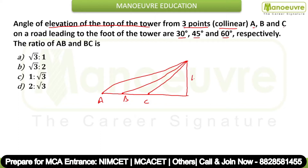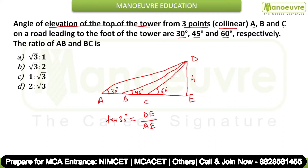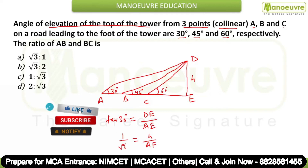Assume the height of the tower is H, and label the base point D and E. In triangle DAE, find tan 30 degrees. Tan 30 equals DE upon AE, which is 1 by root 3 equal to H upon AE. So AE equals H times root 3.